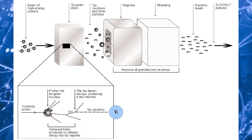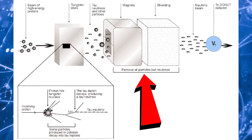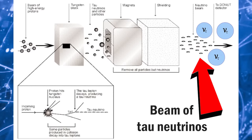The products of these decay chains are then passed through a series of magnets and 36 metres of steel shielding, which deflect away or block almost all particles except the desired Tau neutrinos. The Tau neutrinos are neutral and unaffected by the magnetic field and so weakly interacting that they easily penetrate the shielding. This process creates an intense high-energy beam of Tau neutrinos for study.